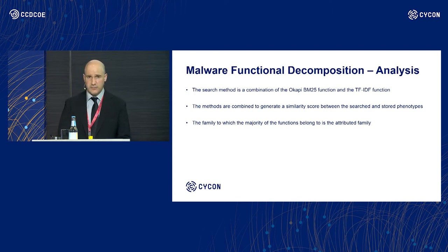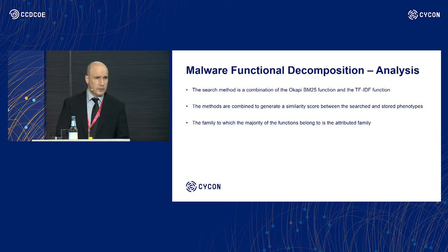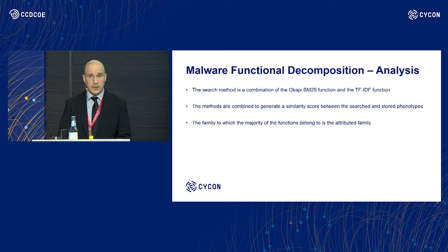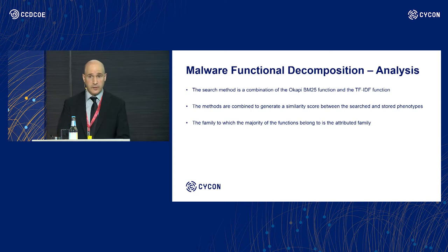We use both functions because in some cases BM25 gives very interesting results, but in some circumstances the results are not that great. Since we are combining the two methods, we get the better of both worlds. The methods are combined to generate a similarity score between the search and the stored phenotypes. The family to which the majority of the functions belong is the attributed family.